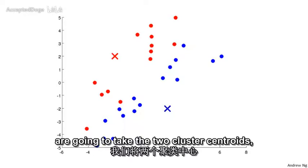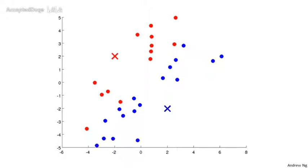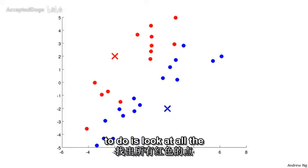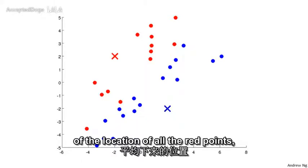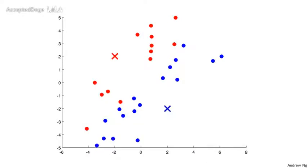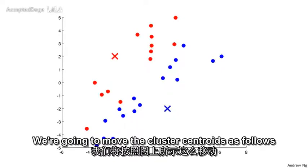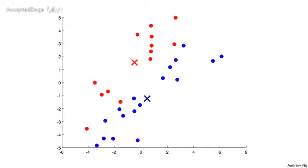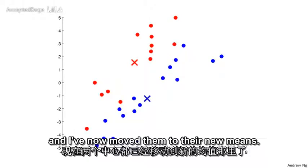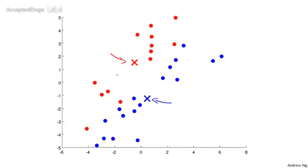In the move centroid step, we're going to take the two cluster centroids — the red cross and the blue cross — and move them to the average of the points colored the same color. So we look at all the red points, compute the mean of their locations, and move the red cluster centroid there. The same thing for the blue cluster centroid: compute that mean and move the blue cluster centroid there. We move the cluster centroids to the new means.